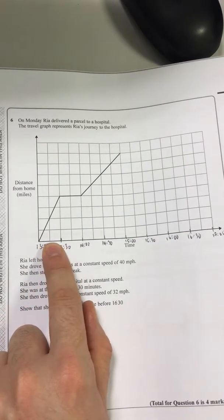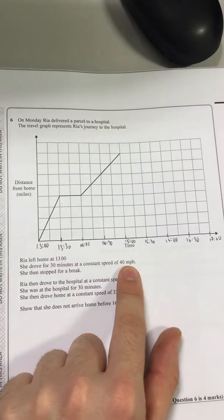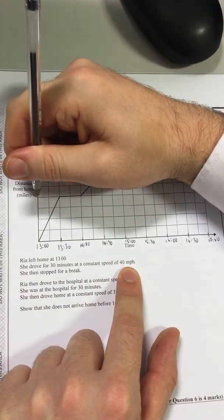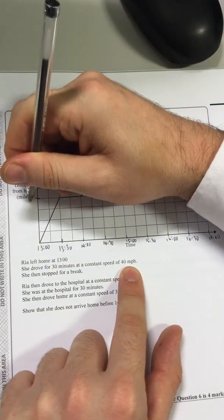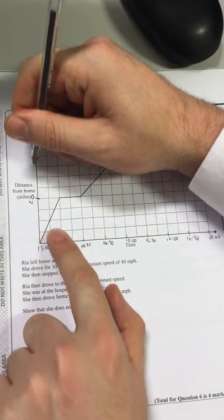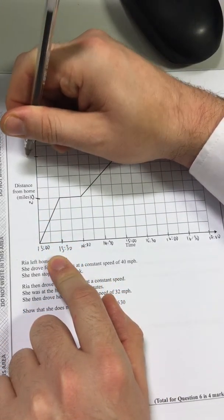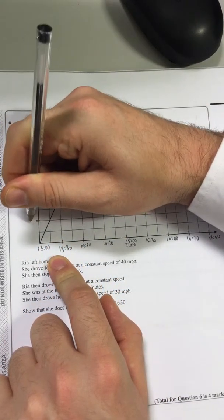Here she drove for half an hour, so we would have done half of that. So that is 20 miles. That's 20. So every four squares is 20. That's just going to make it easier. So that means every two squares is 10.